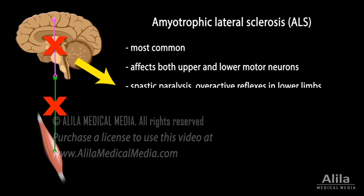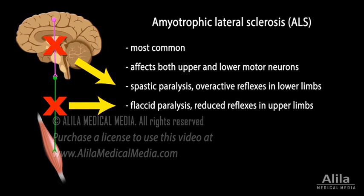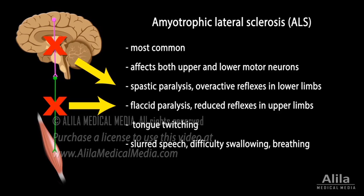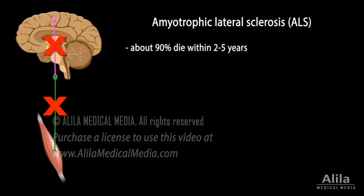Patients typically present with spastic paralysis and overactive reflexes in the lower limbs, and flaccid paralysis and reduced responses in the upper limbs, along with tongue twitching. In the later stage, symptoms may also include slurred speech and difficulty swallowing and breathing. Most people with ALS die from respiratory failure, typically within a few years from diagnosis, although a small number of patients may survive for a much longer time.